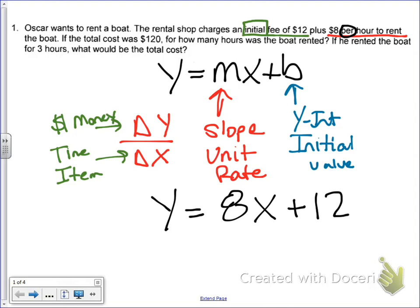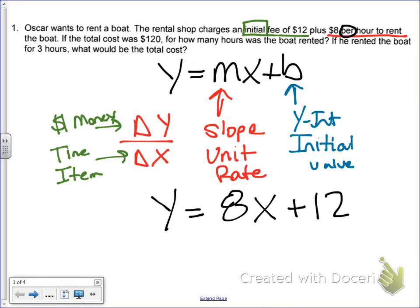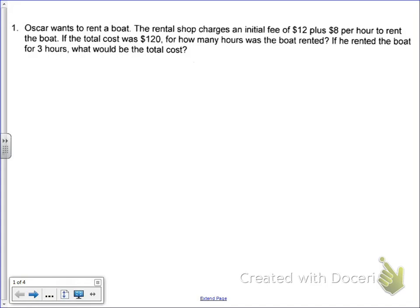So y equals 8x plus 12. Now, let's go ahead and go to a new slide here real quick. We're going to keep that same, oh no, come back here. So we want to work with the same information. There we go. Work with the same information. But now just work with the equation that we have. So in this equation, we want to know if the total cost is $120, how many hours was the boat rented? So remember, we talked about it. Y is going to equal money. So y on top and money is always on top. So we associate money with y and in this case, the hours with x. So it tells me the total cost of $120. Meaning I'm going to plug in 120 for y.